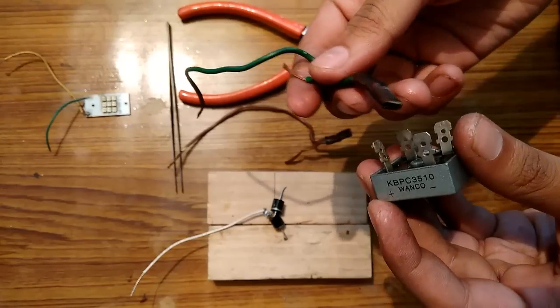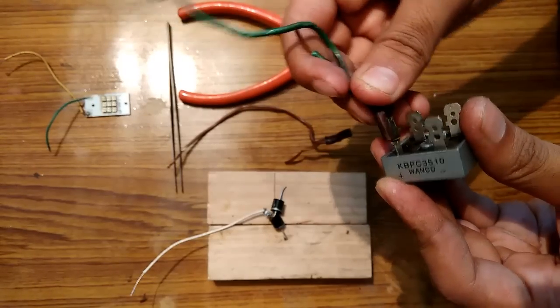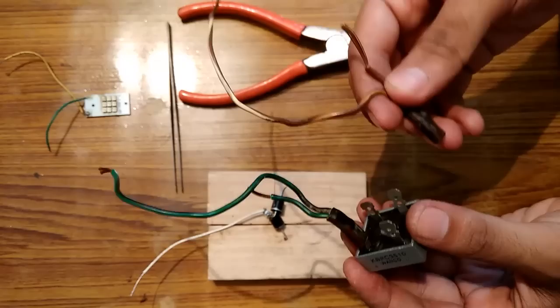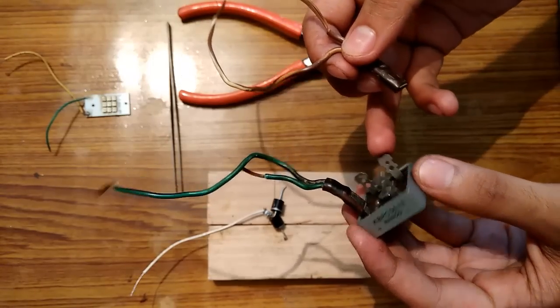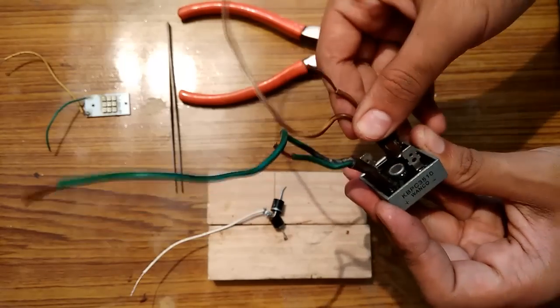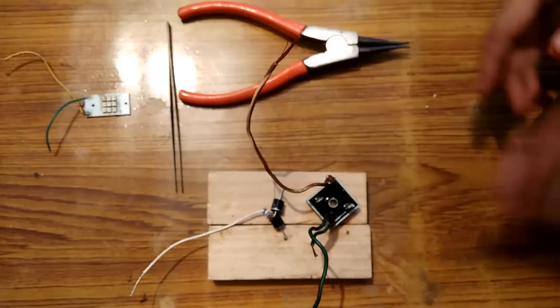So I am going to connect the green wire to the positive terminal of the rectifier, like this. And the brown wire to the negative which will be the diagonal. This is the diagonal. So this will be the negative. So I am connecting the brown wire here. And it's done.